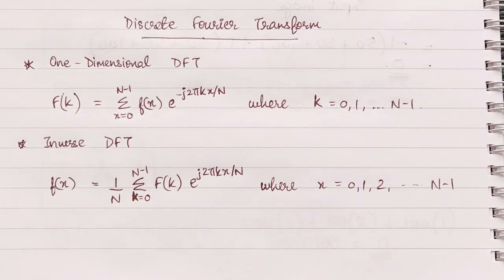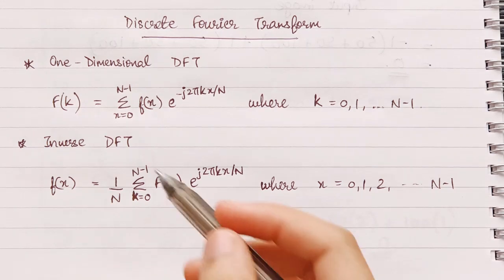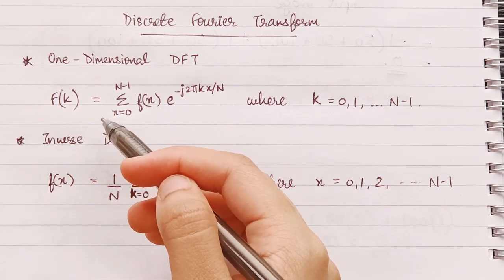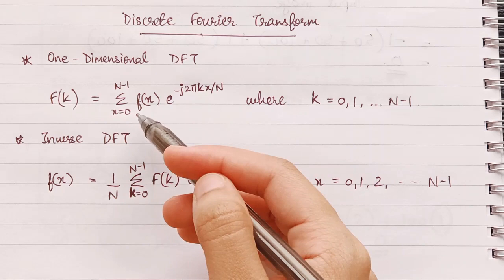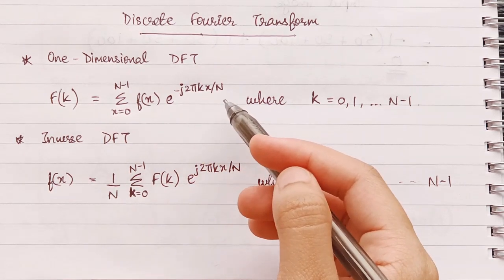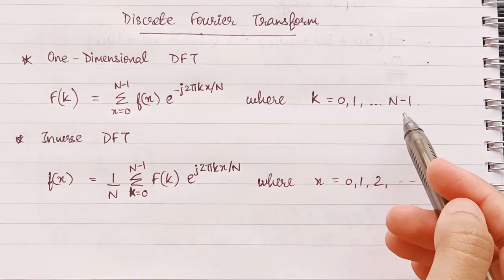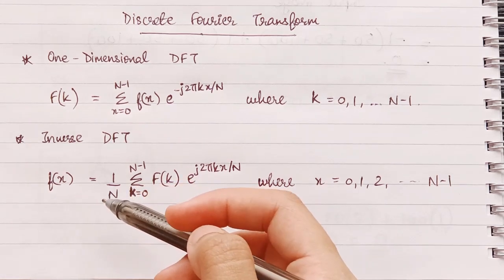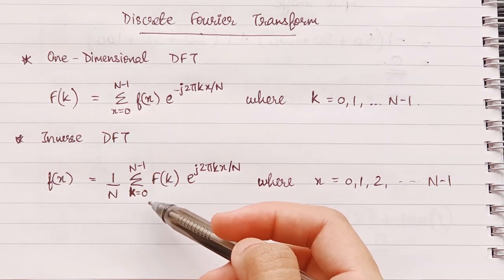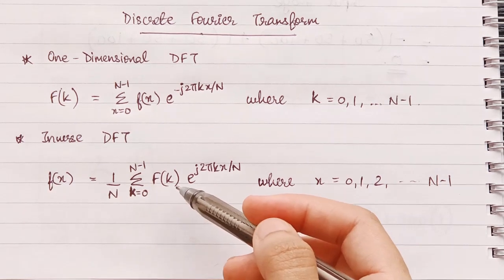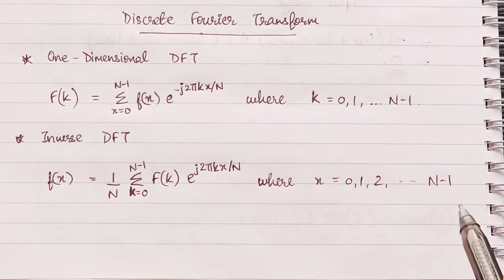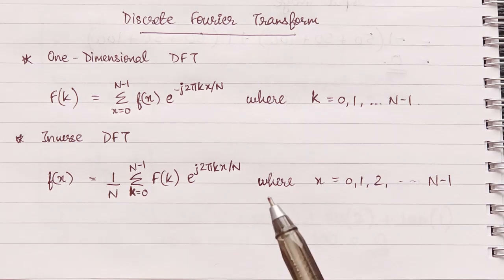Now image transforms are of different types. Let's look at discrete Fourier transform first. We look at one-dimensional DFT. The formula for which is: F(k) = Σ (x=0 to N-1) f(x) · e^(−j2πkx/N), where k = 0, 1, ..., N−1. The inverse DFT is: f(x) = (1/N) Σ (k=0 to N-1) F(k) · e^(j2πkx/N), where x = 0, 1, 2, ..., N−1. You will understand this better when you solve the questions.